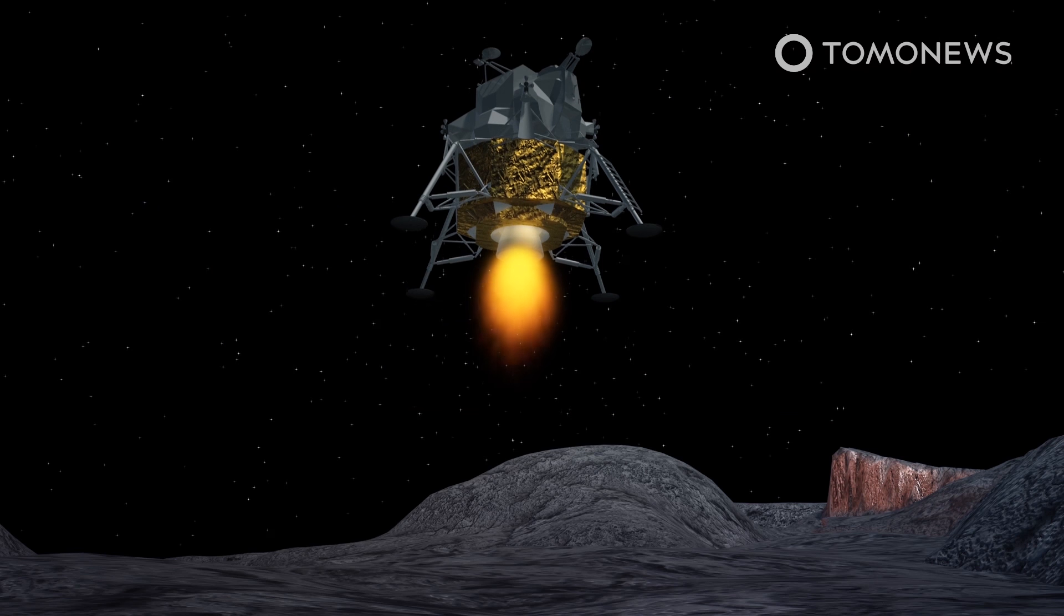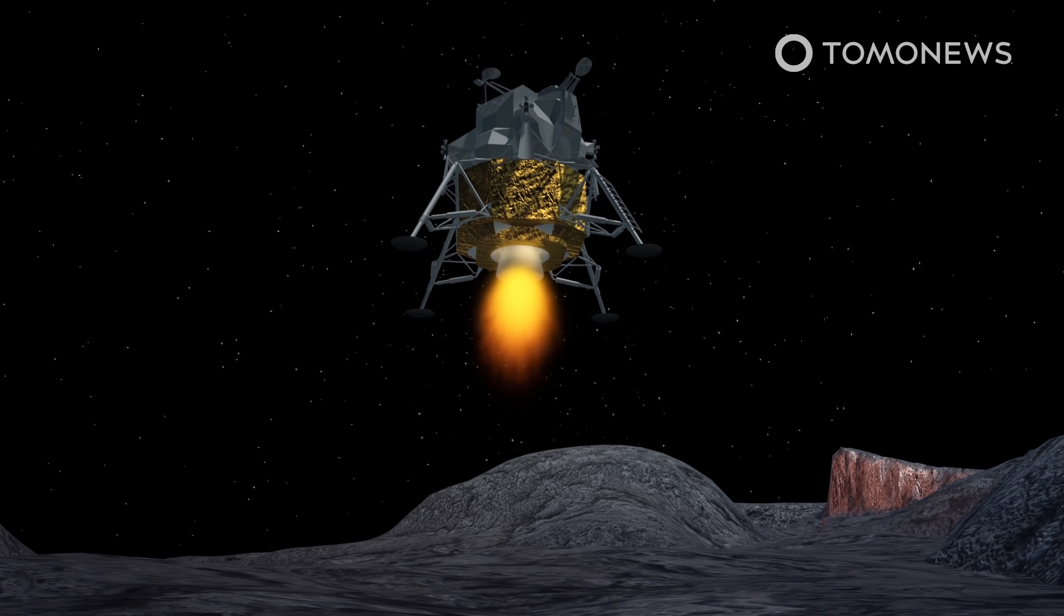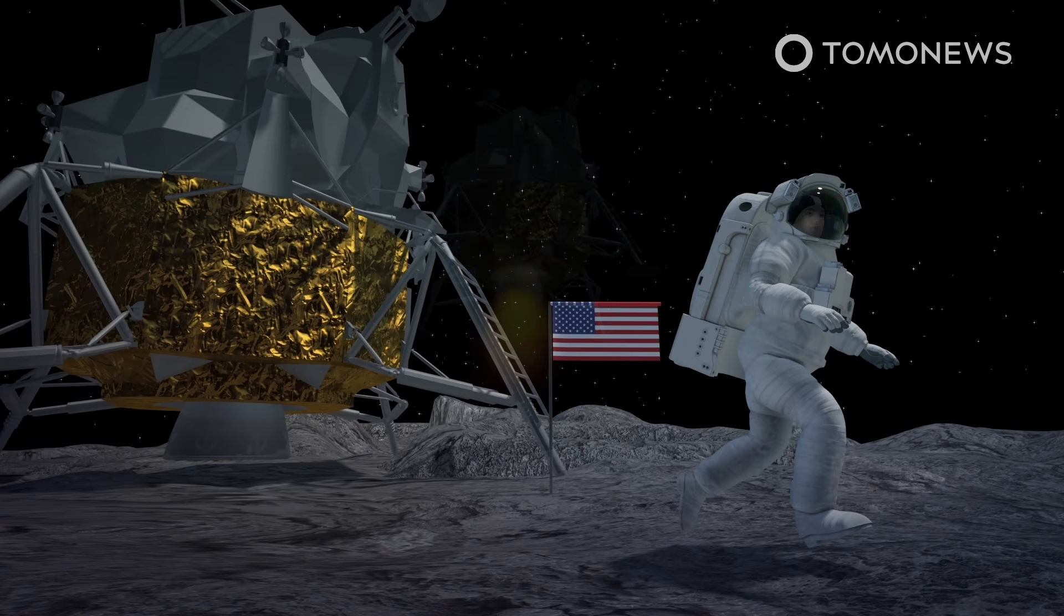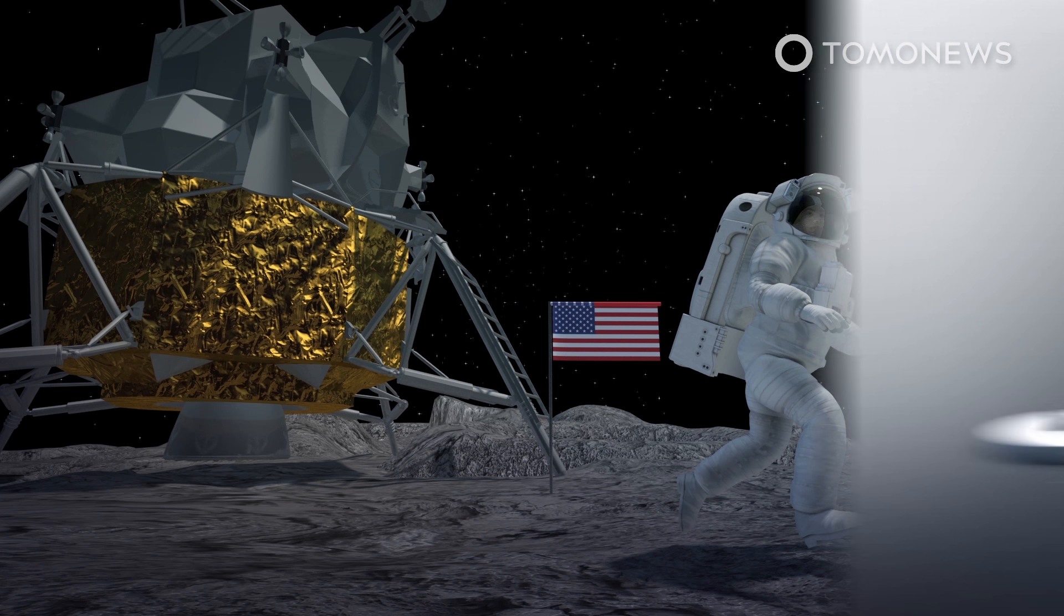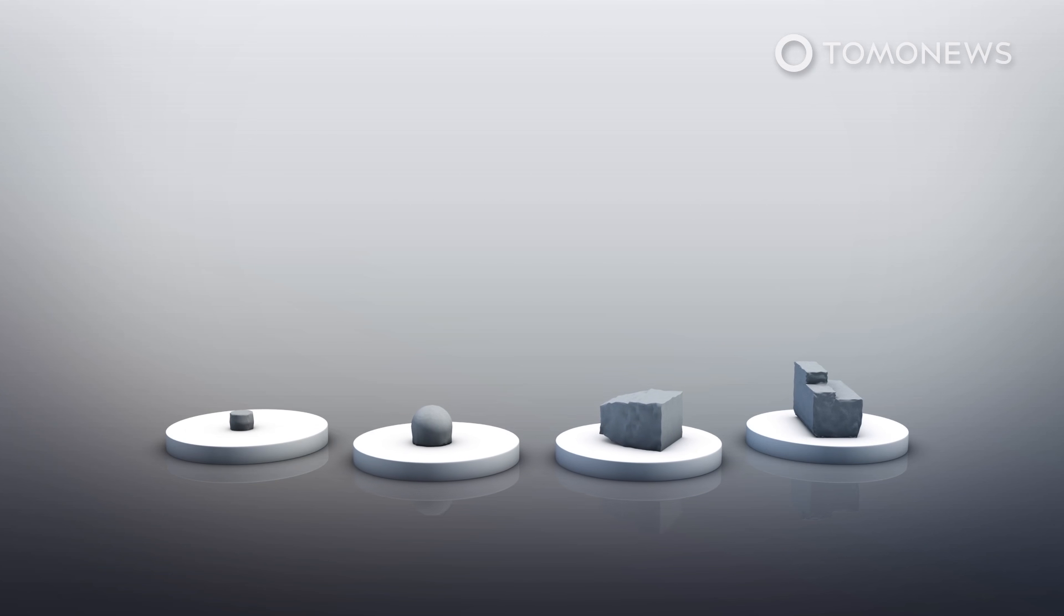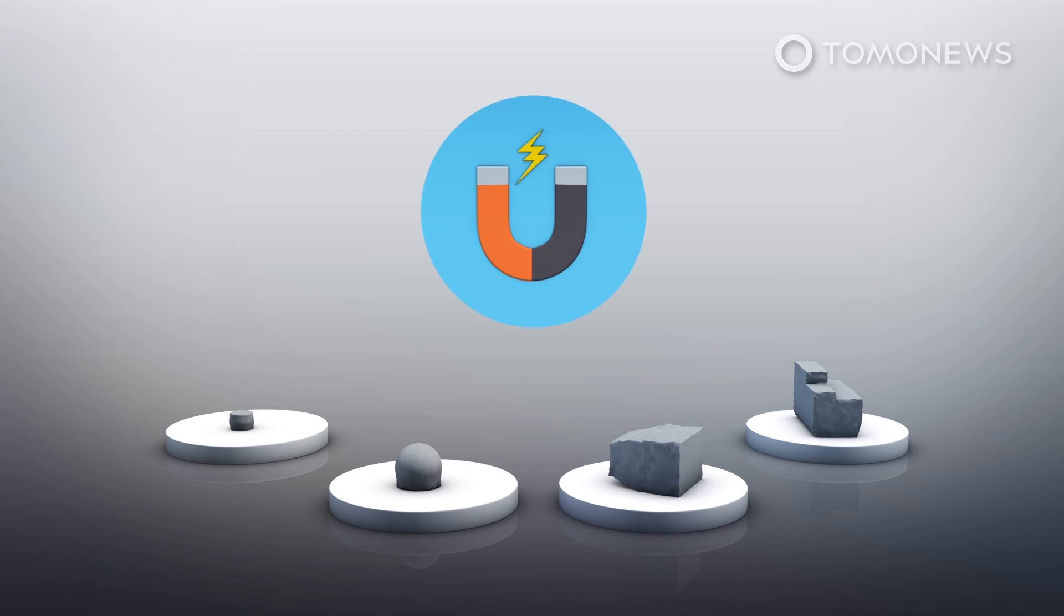In a study published in Science Advances, researchers say that the Apollo mission collected lunar rocks that preserve a record of the moon's ancient magnetic field. However, most of these rocks dated to between three and four billion years, or too long ago for studying the end of the moon's internal dynamo.